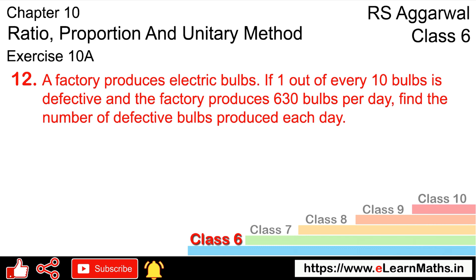Let's do question number 12 of exercise 10A, that is ratio and proportion. Question number 12: a factory produces electric bulbs. If one out of 10 bulbs is defective, and the factory produces 630 bulbs per day, find the number of defective bulbs produced each day.